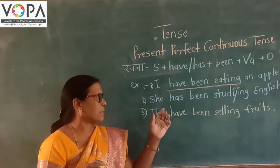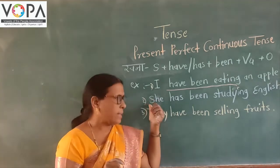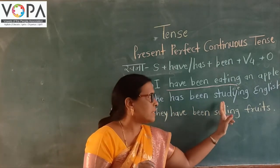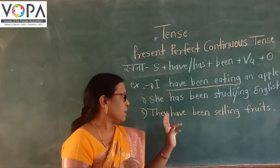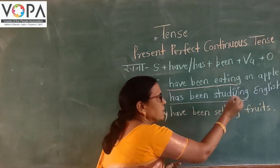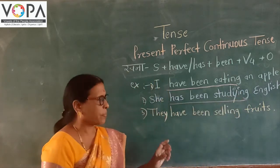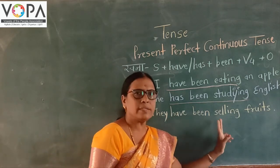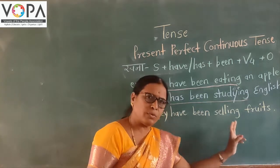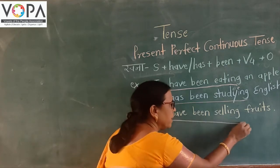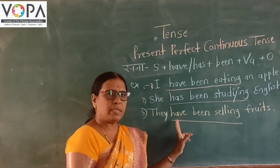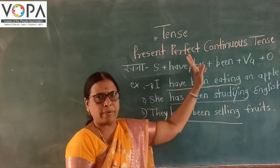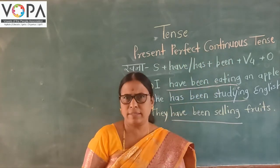For more examples: She has been studying English — has been studying. They have been selling fruits — have been selling. This structure is of Present Perfect Continuous Tense.